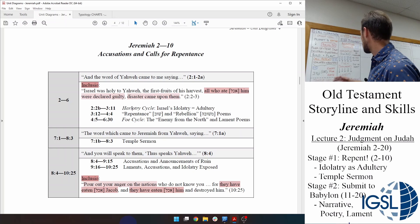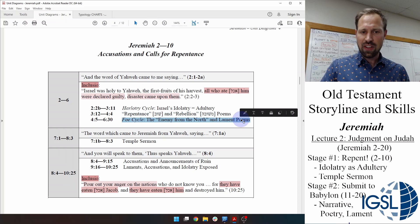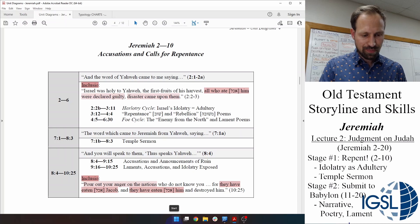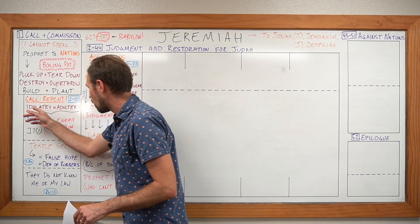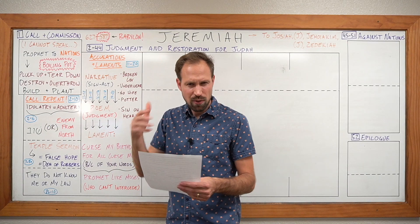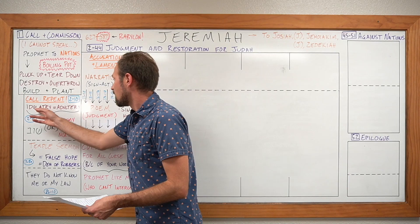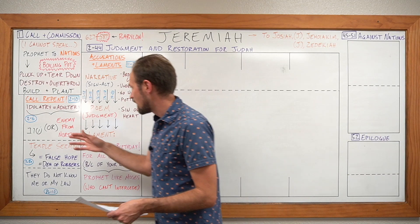In this first section, we have a collection of Jeremiah's major themes of judgment — accusations, a call for repentance, and a warning of coming judgment from that enemy, that boiling pot from the north. One of the prophets' favorite metaphors for Israel's sin is idolatry as adultery. At Mount Sinai, when Israel entered into a covenant with Yahweh, it was as if they entered into marriage. But then what happened afterwards is they served and worshiped other gods — this was like an act of adultery, of marital unfaithfulness.